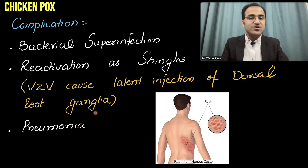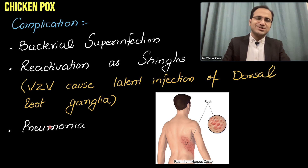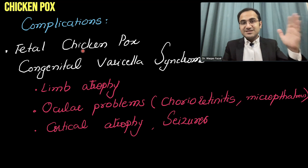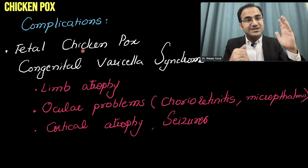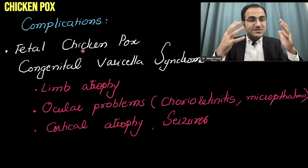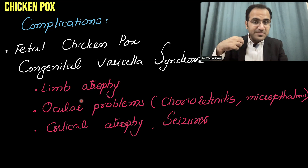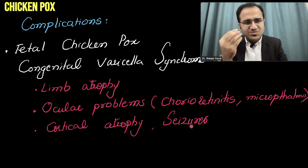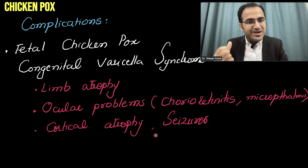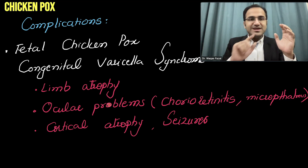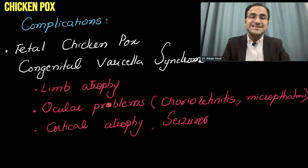VZV causes latent infection in the dorsal root ganglia — that is a complication that can appear after years. Pneumonia is also a common complication. Additionally, there is fetal chickenpox, or congenital varicella syndrome, from transplacental transmission. Congenital varicella syndrome causes limb atrophy, ocular problems, chorioretinitis, microphthalmia (small eyes), cortical atrophy of the brain, and seizures. This is a very dangerous complication.